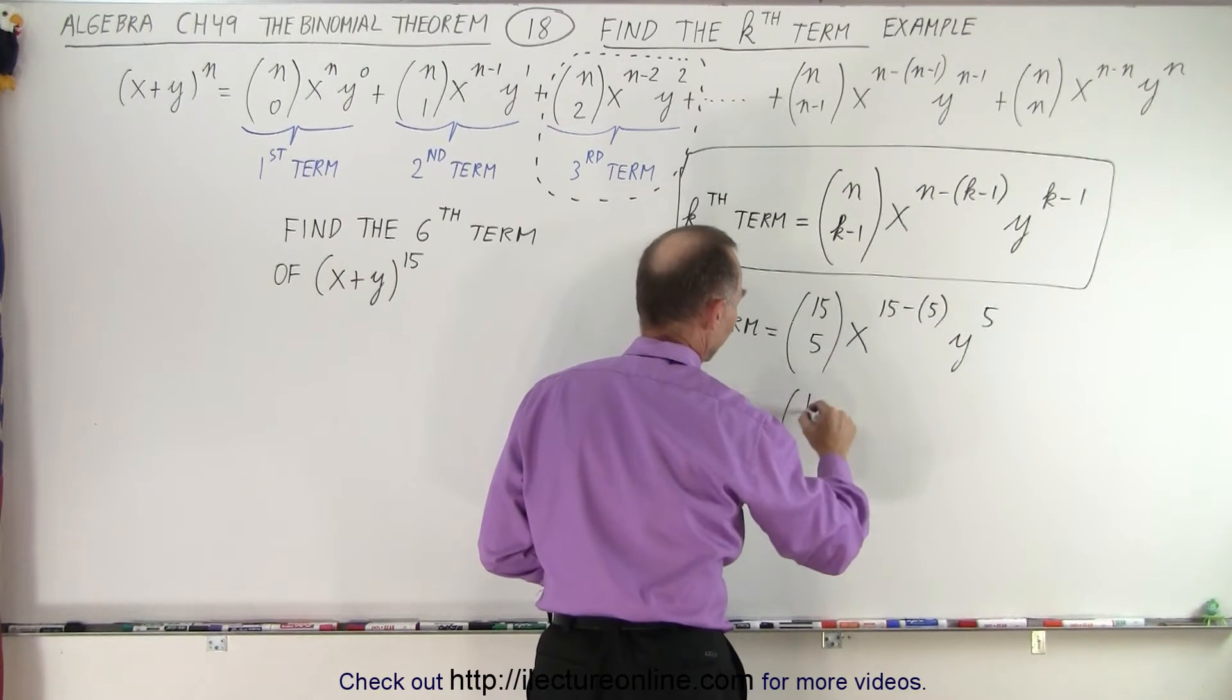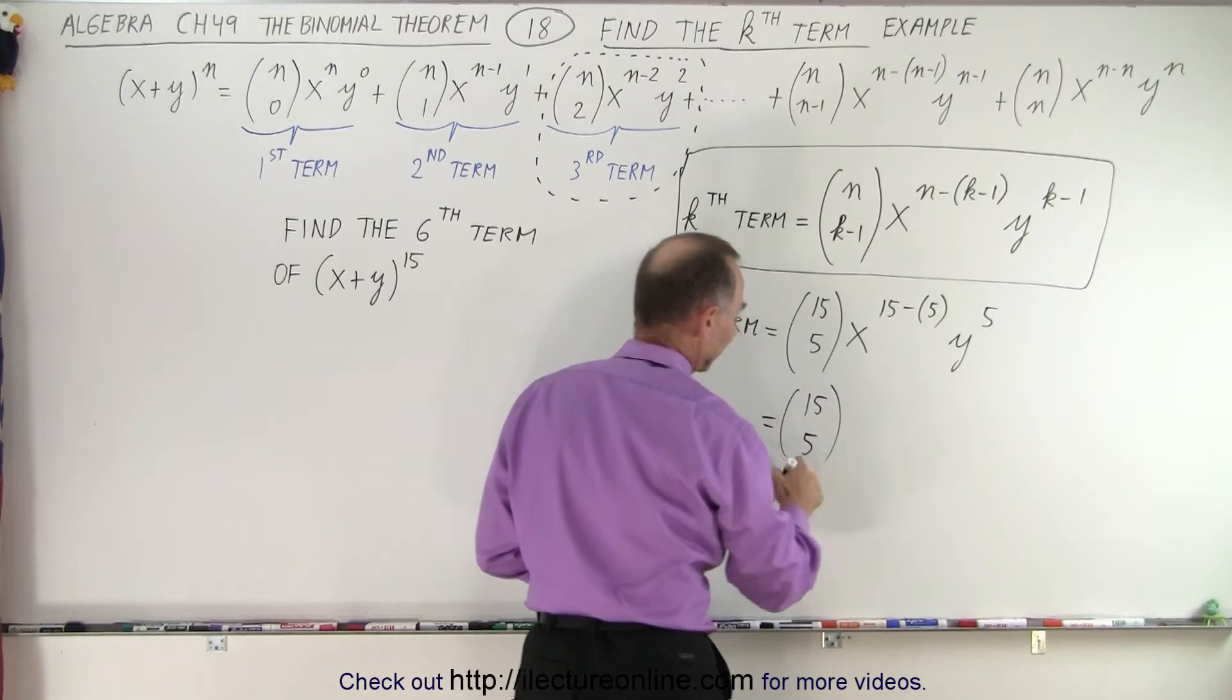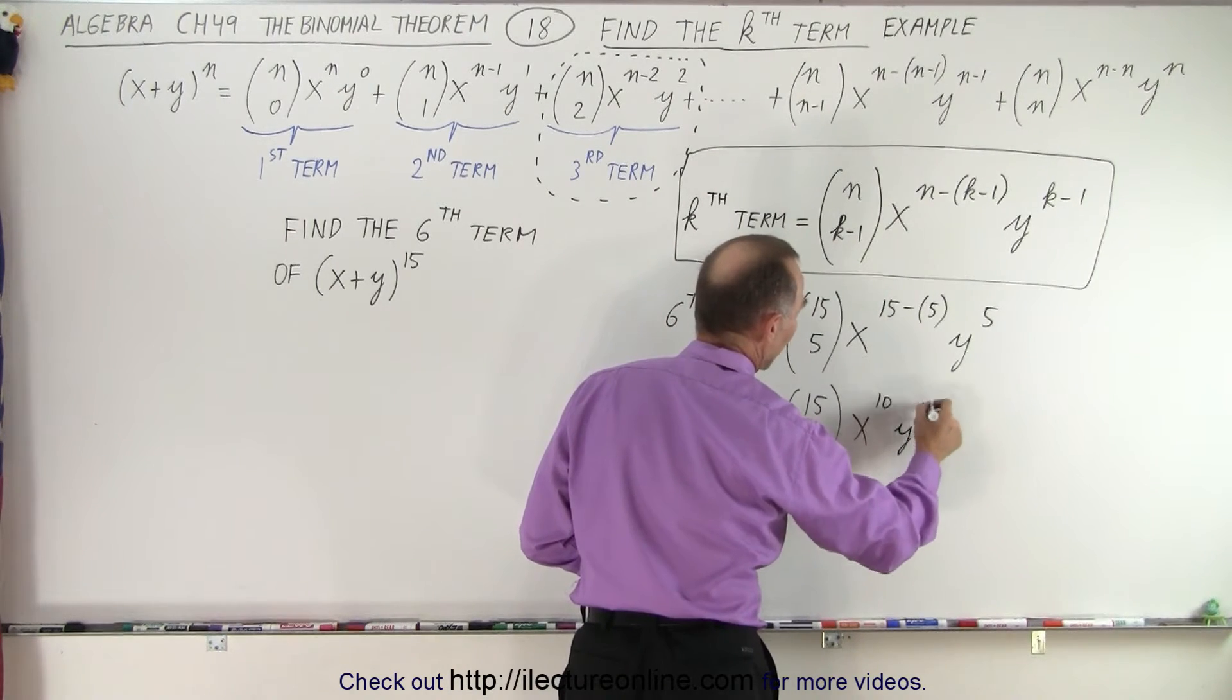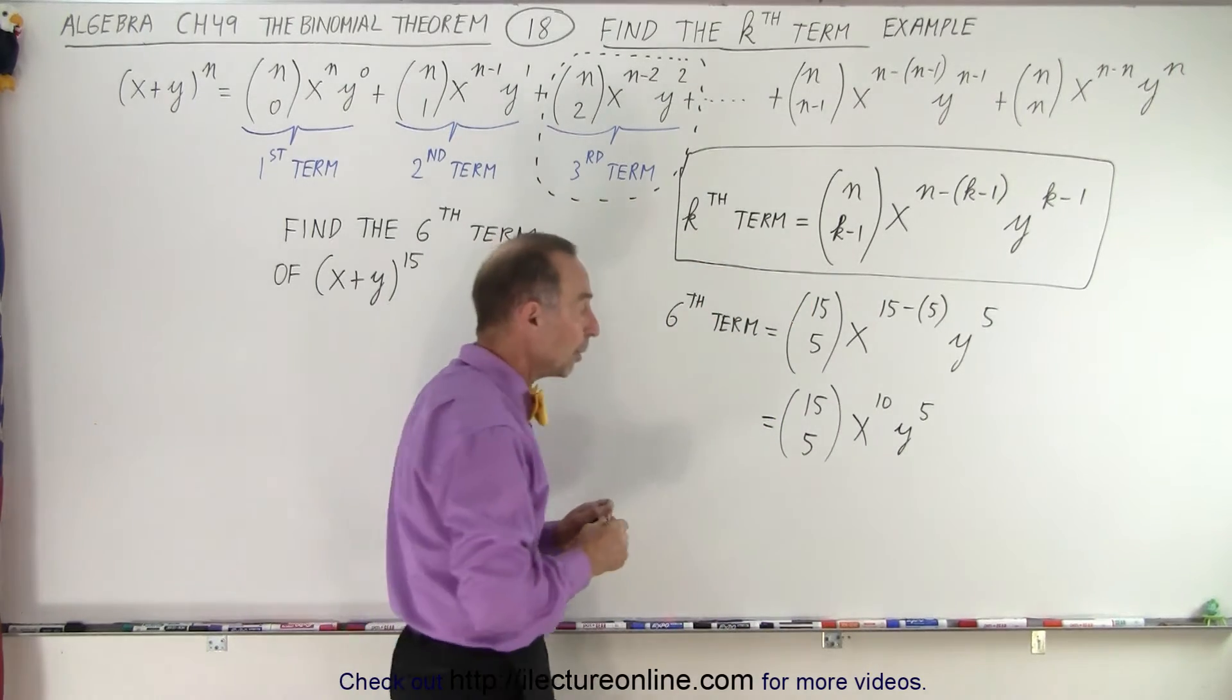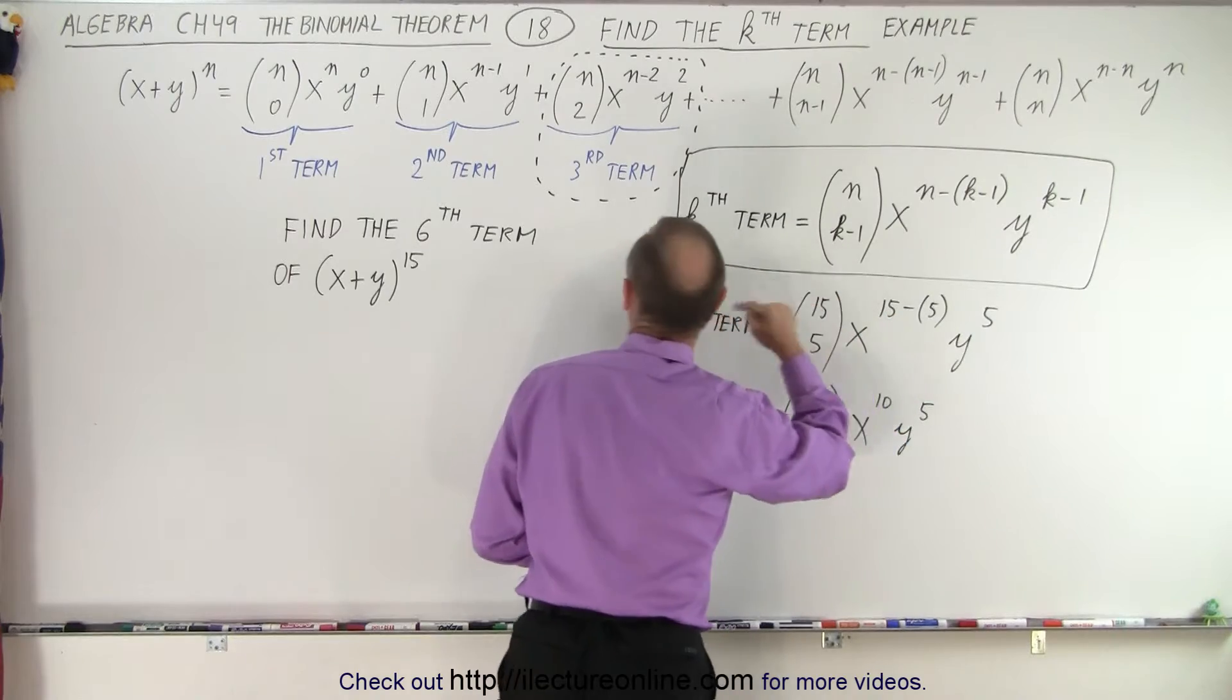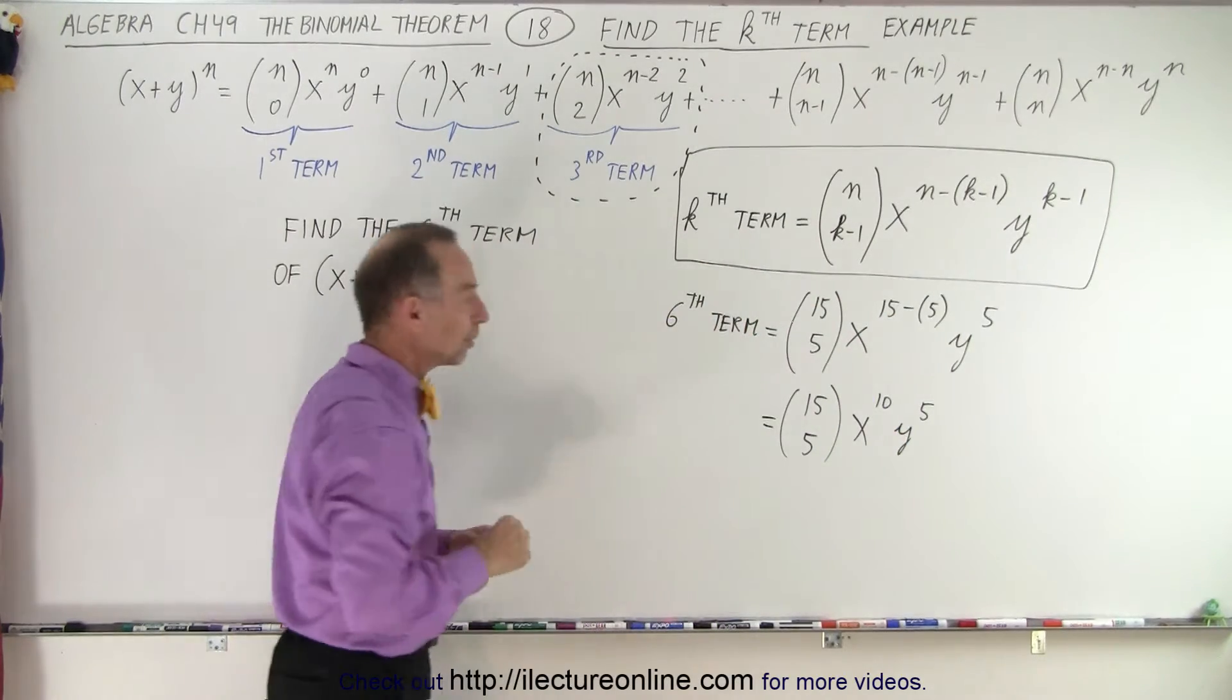So in other words, we're looking for 15 choose 5. And of course, we have to expand that: x to the 10th power, y to the fifth power. One way to check to see if you didn't make a mistake in the exponents: the two exponents added together better add up to the exponent right here in our binomial expansion.